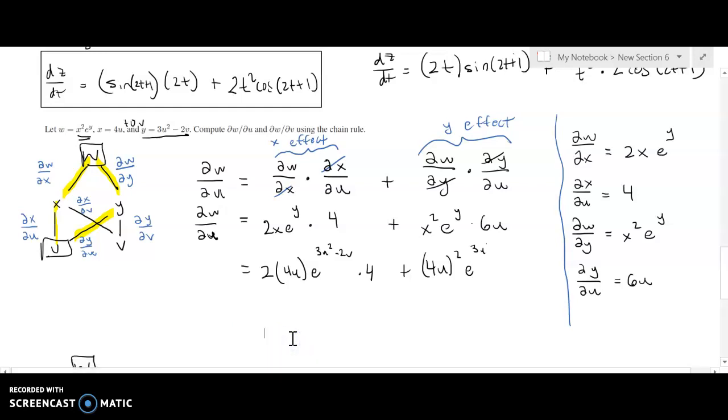In the previous video we got cut off right at the end of our computation of dw/du. The only thing that we were missing was the 3u minus 3u squared minus 2v and then times 6u.